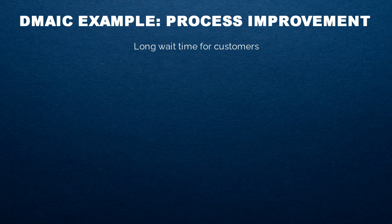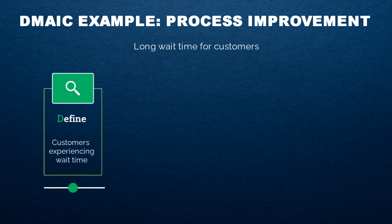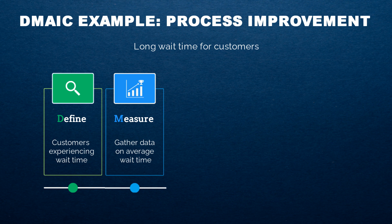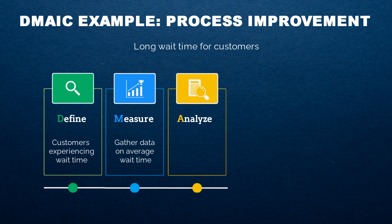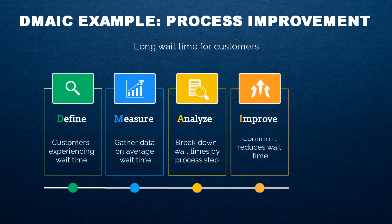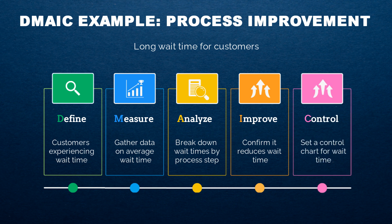DMAIC example: Process improvement — long wait time for customers. Define: Customers are experiencing average wait times longer than the service level target of 5 minutes to place an order. Measure: Gather data on average customer wait times during peak periods through direct observation or existing systems. Analyze: Break down wait times by process steps — perhaps order payment is taking longer than needed due to an outdated system. Improve: Implement a new payment tablet system to reduce payment validation time and confirm it reduces average overall wait time. Control: Set a control chart for average wait time; if it drifts back up, determine if more tablets are needed during the busiest periods to prevent backsliding.